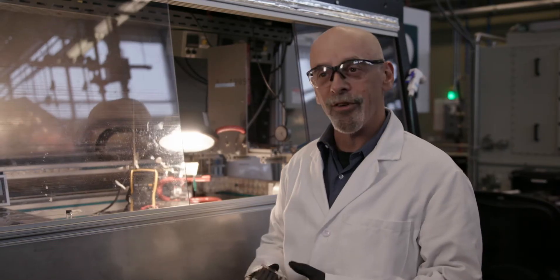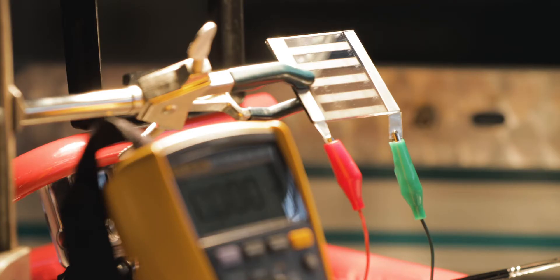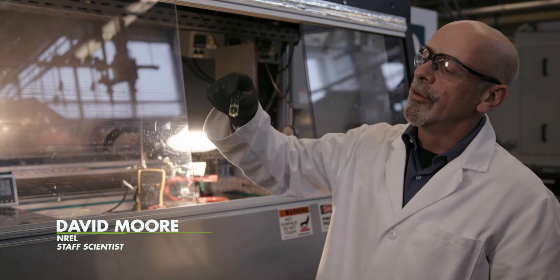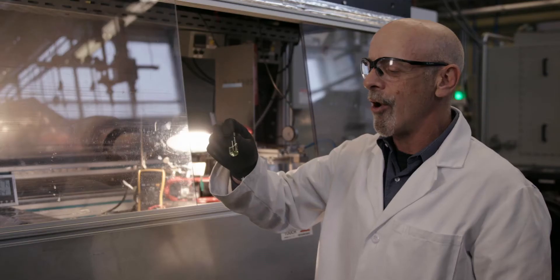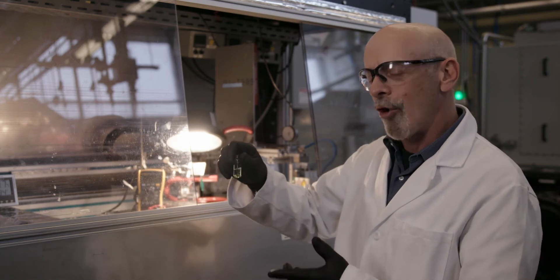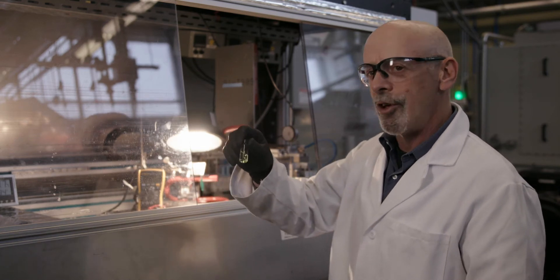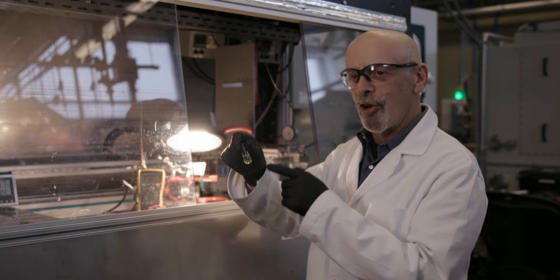What we're going to do today is we're going to paint a solar cell, and so this is our paint. This is what we call methyl ammonium lead triiodide. It's a perovskite structure and it will dry very rapidly. You'll know when it's absorbing light because it'll turn brown.